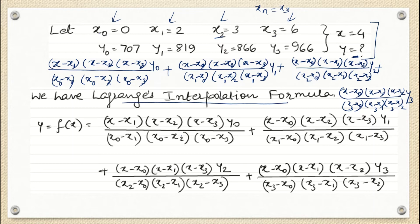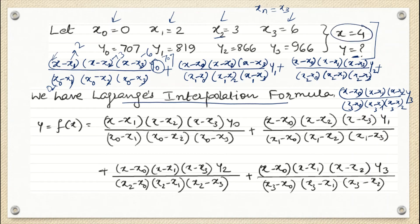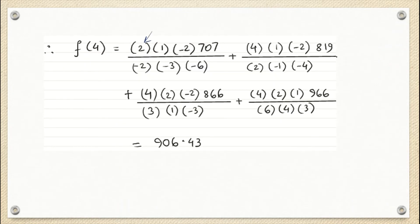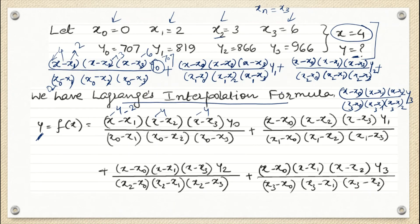Now we just have to put the values. Instead of x1, write 2; instead of x2, write 3; x3 is 6. x0 is 0, y0 is 707. We replace x with 4 everywhere to find the value of y. So for instance, the first factor becomes (4 - 2). Just write down the formula properly, put all the values, do the calculation, and you will get the answer.